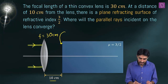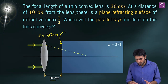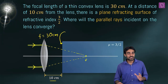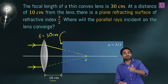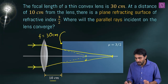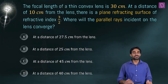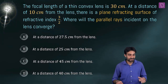The parallel rays incident on the lens have a tendency to converge at the focus. But there is a refracting surface, so the rays will hit that surface and suffer refraction — they bend towards the normal and now converge at some different location. We need to find this new location.